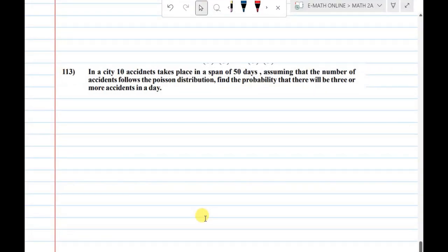In a city 10 accidents takes place in a span of 50 days assuming that the number of accidents follows a Poisson distribution. Find the probability that there will be three or more accidents in a day.